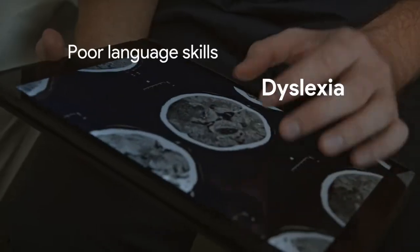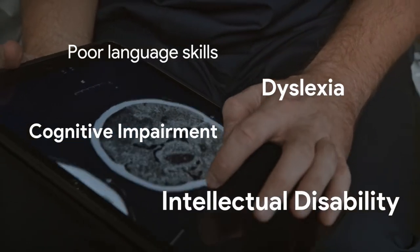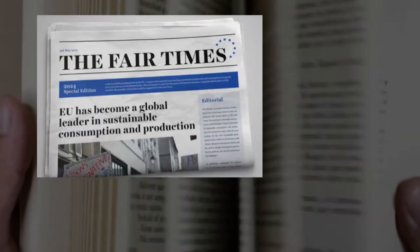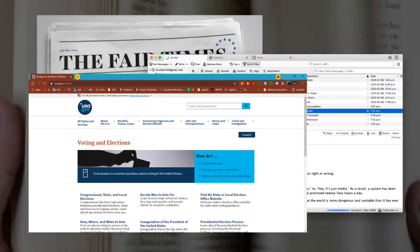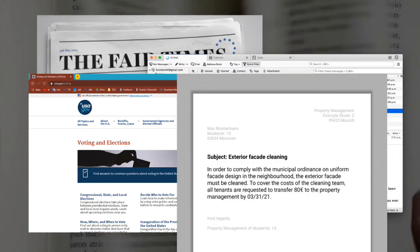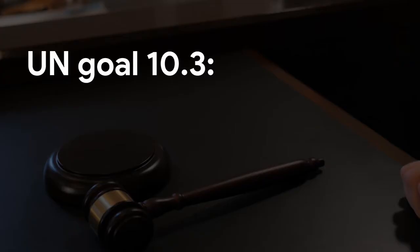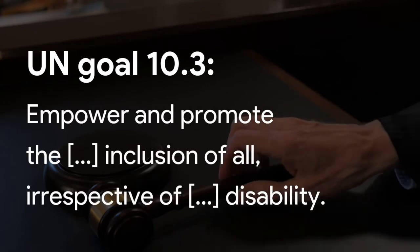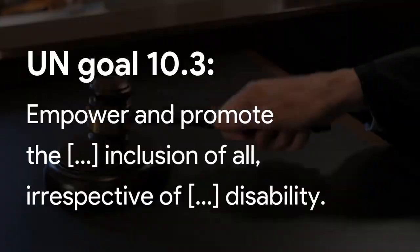Among others, one common cause is intellectual disabilities. In a world where we communicate mainly through text, people with functional illiteracy are excluded in many ways. UN goal 10.3 specifically states to empower and promote inclusion of all, including people with disabilities.